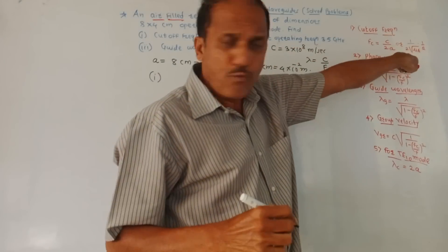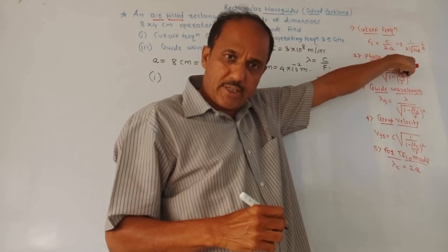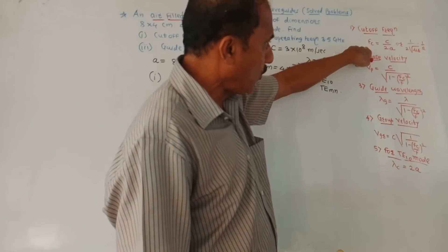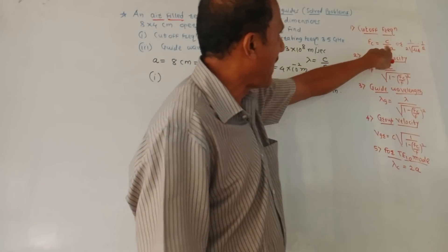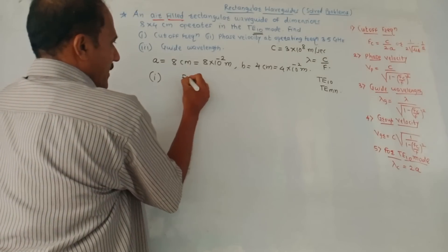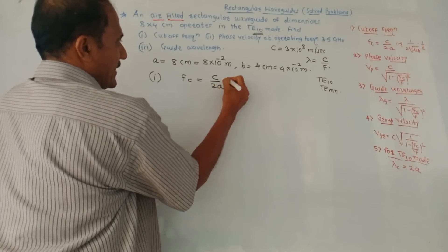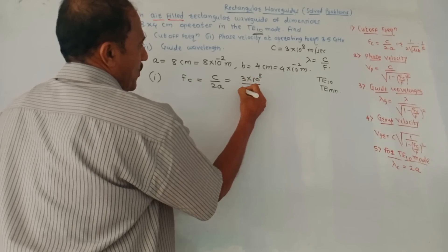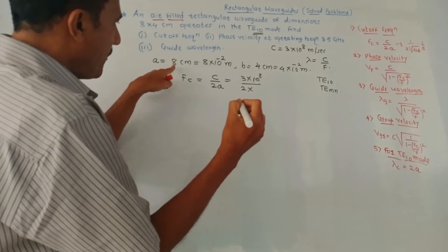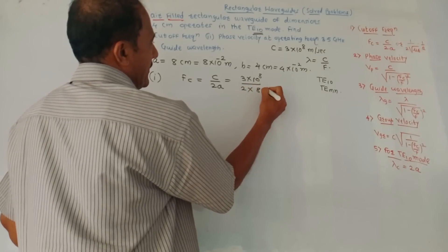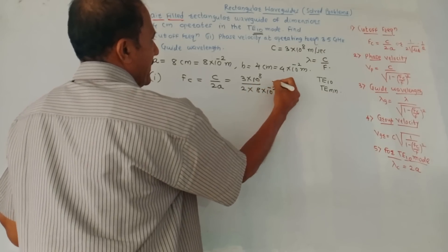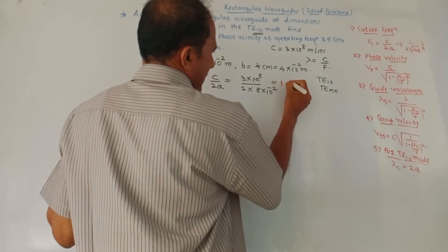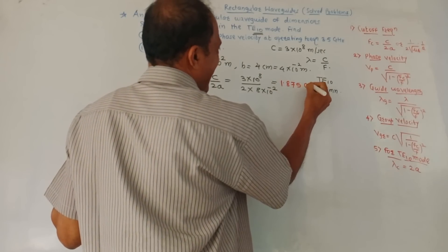For cutoff frequency, we have two formulae. But in the question it is mentioned that the medium is air-filled, so we make use of the first formula: fc equals c by 2a. So fc is 3 × 10⁸ meters per second upon 2 × 8 × 10⁻² meters. The answer of this cutoff frequency is 1.875 gigahertz.